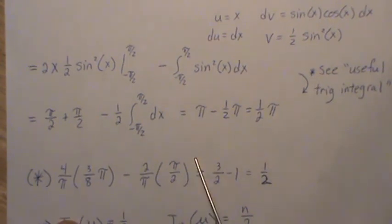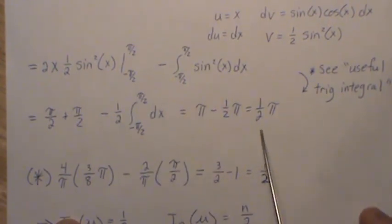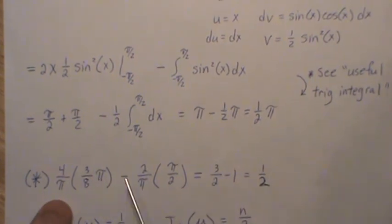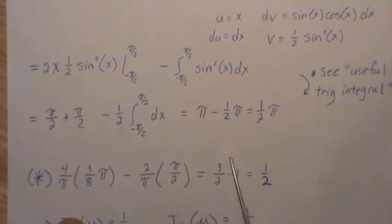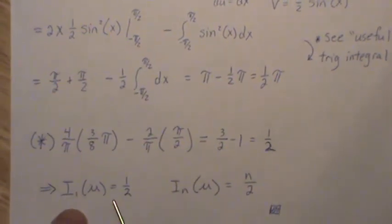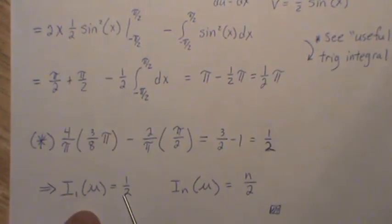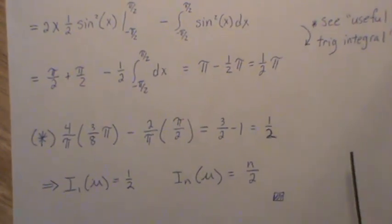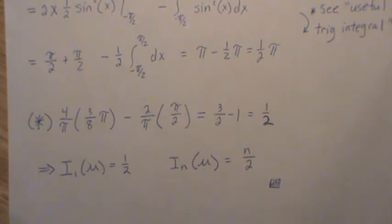Combining the results: Integral 2's value of π/2 with its constant out front, minus the contribution from Integral 1 with its constants, simplifies to 1/2. Therefore, the Fisher information for a sample of size 1 from a Cauchy distribution is 1/2. For a sample of size n, we multiply by n, giving Fisher information equal to n/2. That's all for this video — please like and subscribe so you don't miss the next one. Thanks, bye.